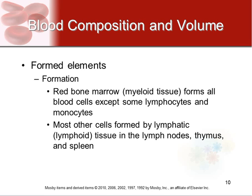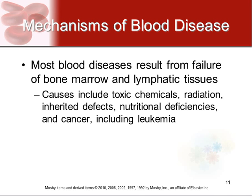Formed elements are normally produced in your red bone marrow — the same bone marrow discussed in the skeletal system. Exceptions include some lymphocytes and monocytes, which are formed in a few other places. Most other cells are formed in lymphatic tissue: lymph nodes, thymus, and spleen. Blood diseases often result from a failure of bone marrow or lymphatic tissue, caused by toxic chemicals, radiation, inherited diseases, nutritional deficiencies, or cancers like leukemia.